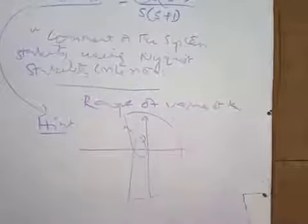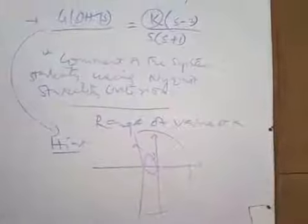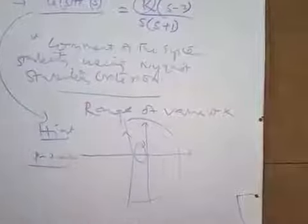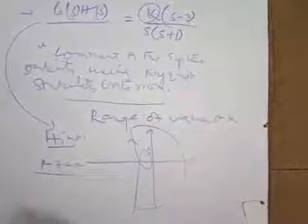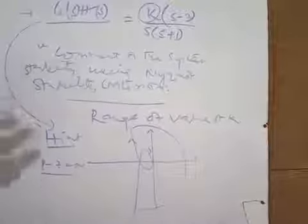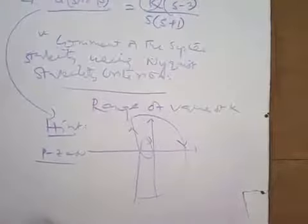Follow the steps described: draw the polar plot, draw the Nyquist contour, then apply P - Z = N to determine stability. These lectures cover polar plot, Nyquist plot, and Nyquist stability criteria with solved examples. Hope you have understood all these concepts and can now solve this assignment problem.